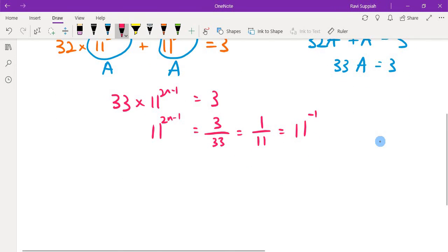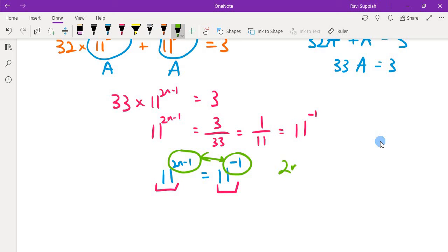Now putting it together, 11^(2n-1) equals 11^(-1). Since both bases are the same, we can say that the power 2n minus 1 equals minus 1.